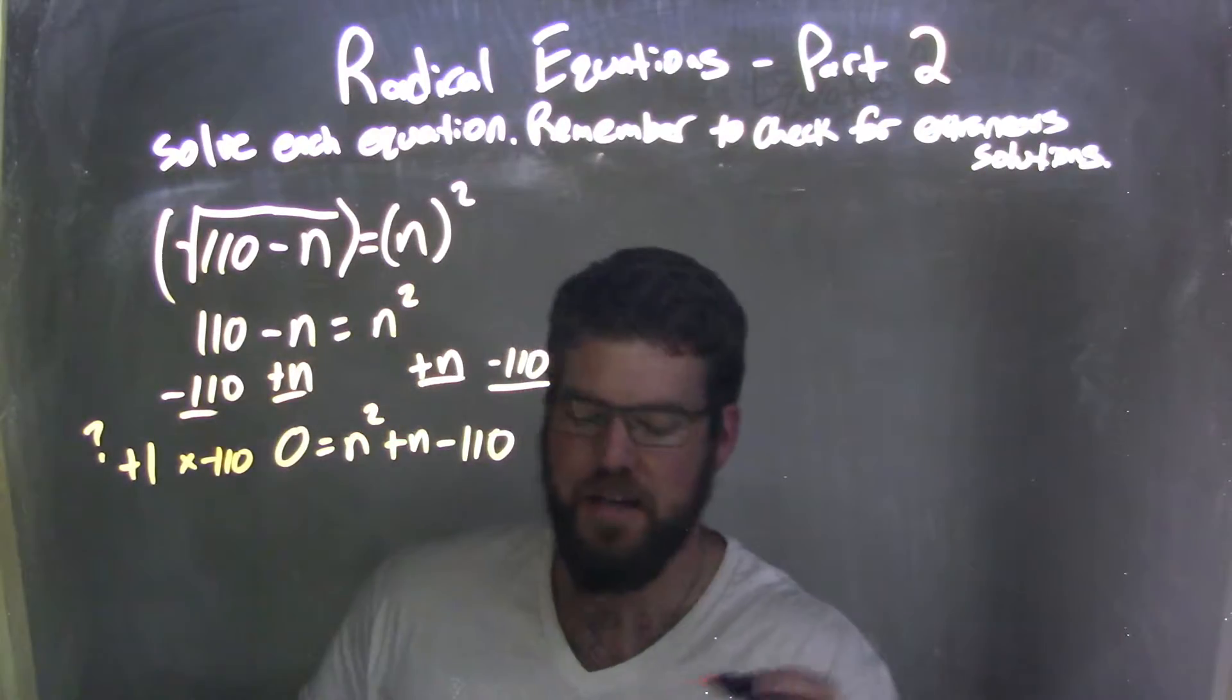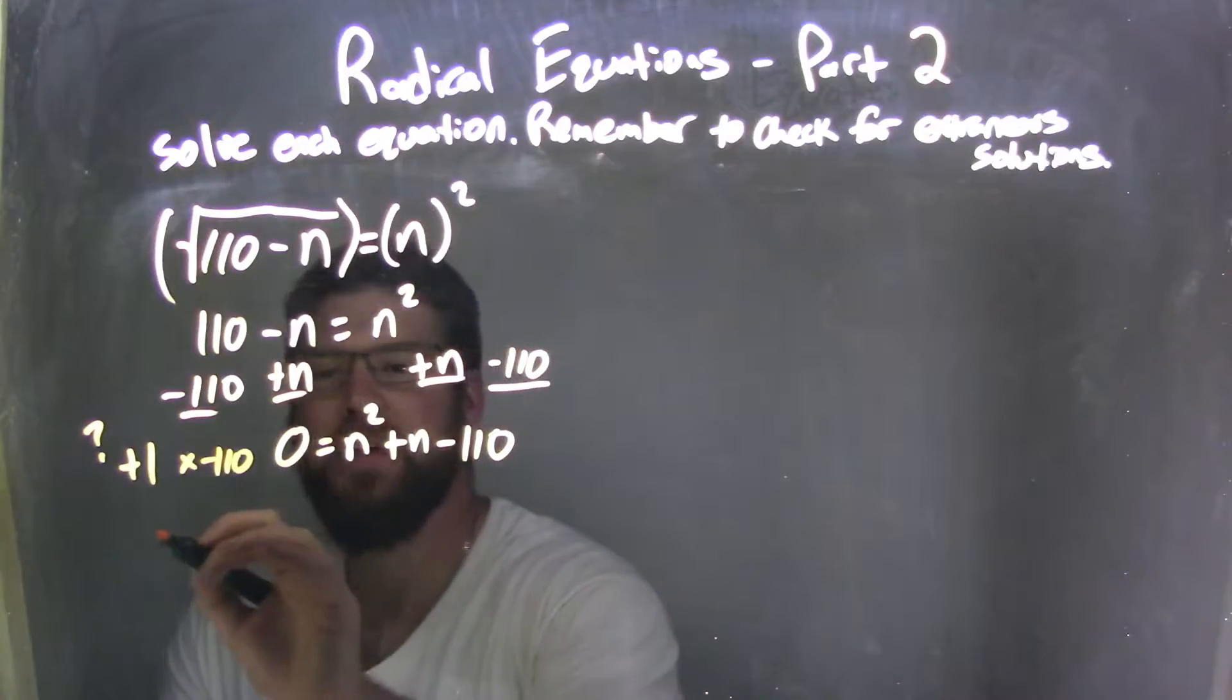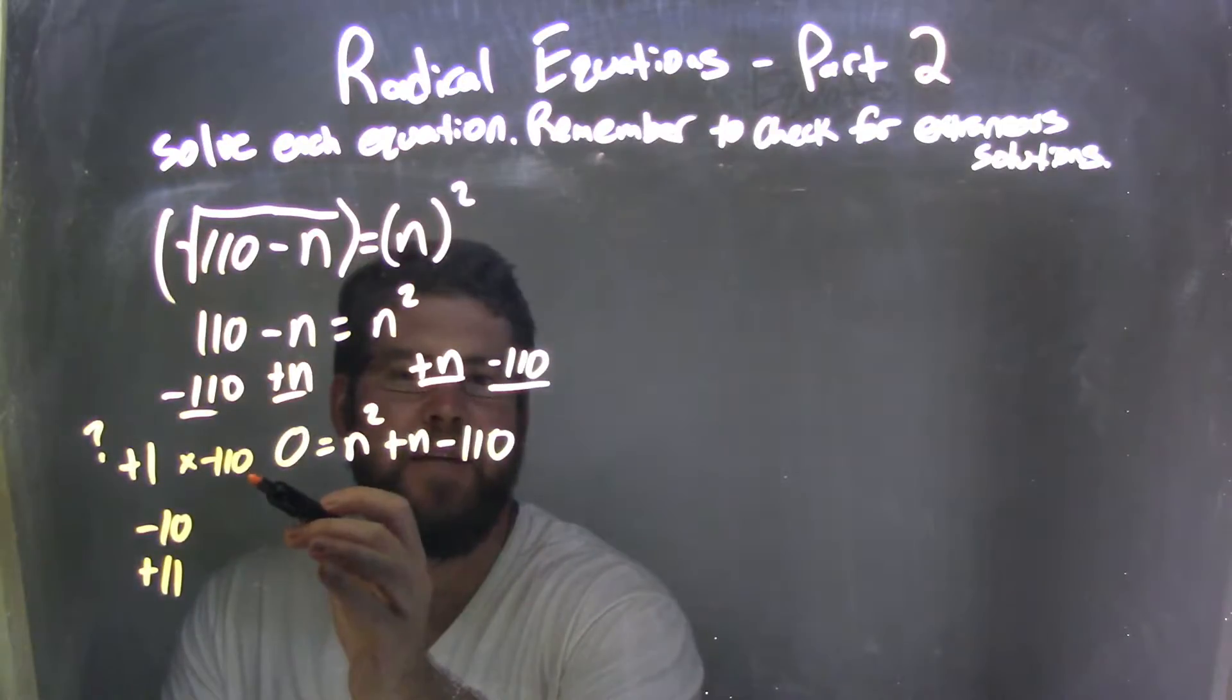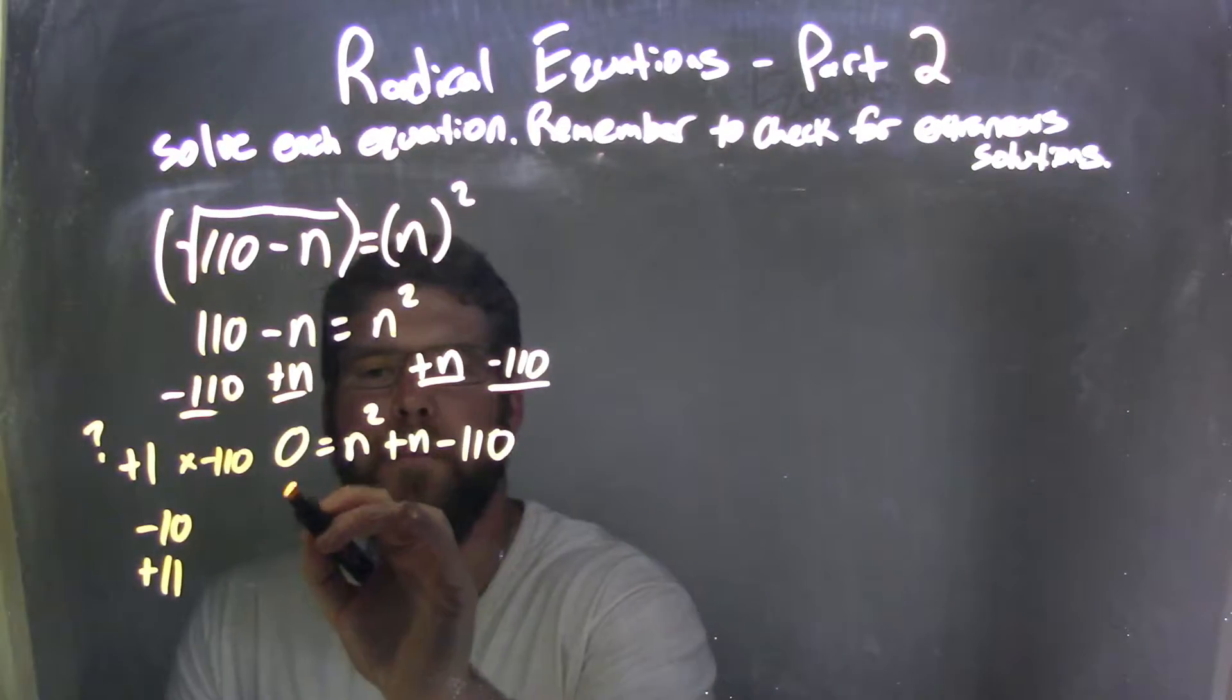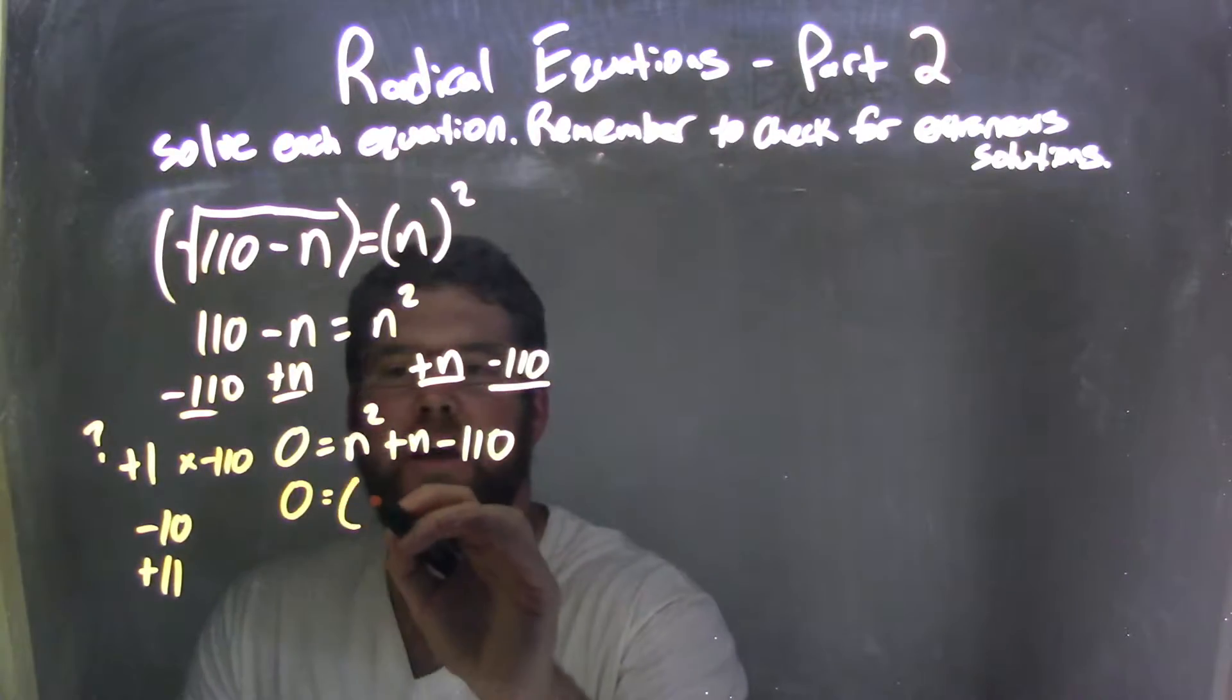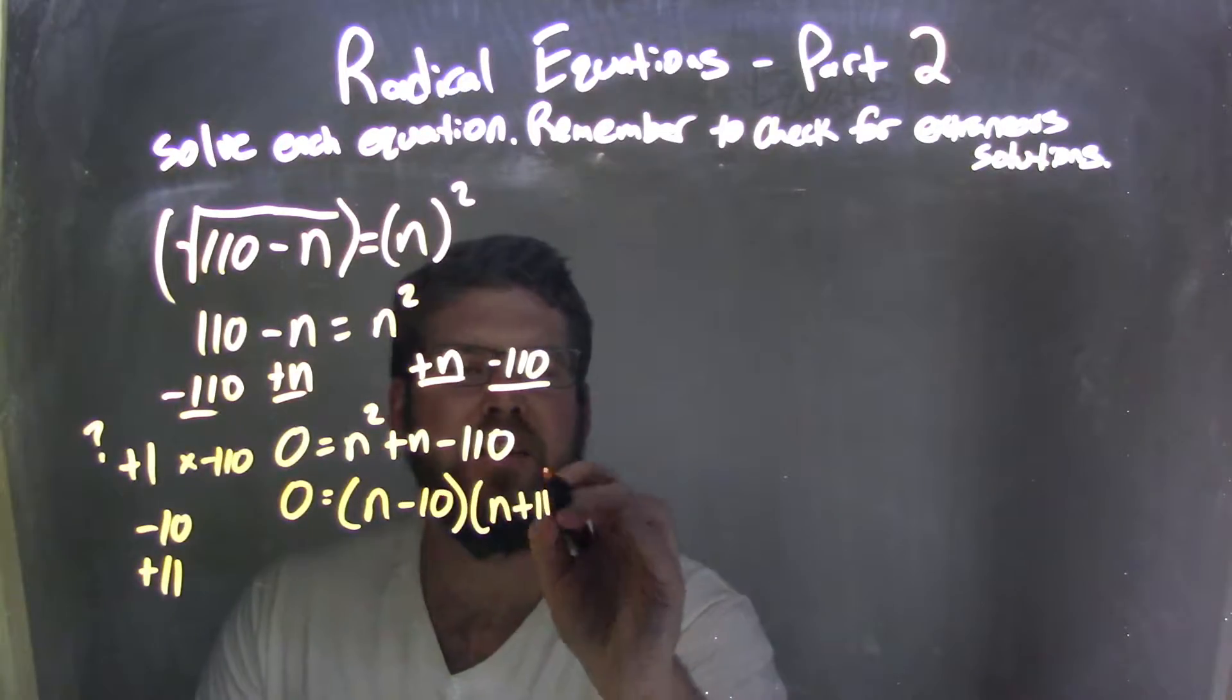So what two numbers add to be 1 and multiply to be negative 1/10? Well, that's going to be a negative 10 and a positive 11. Negative 10 times positive 11 is negative 1/10, and they add together to be a positive 1. So, meaning I can factor this, factor this one out to be n minus 10 and n plus 11.